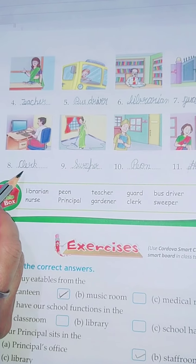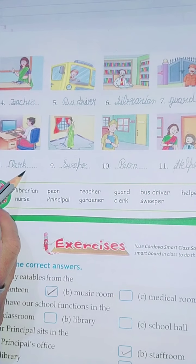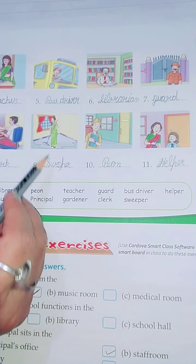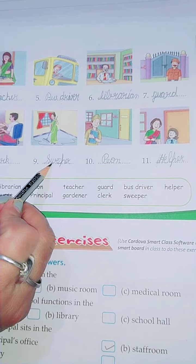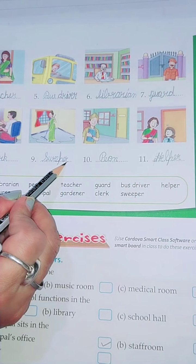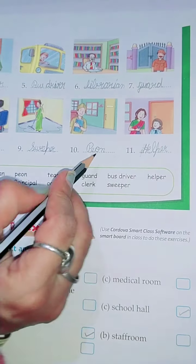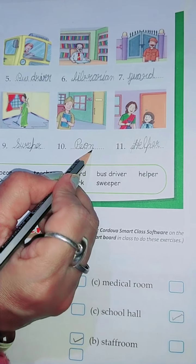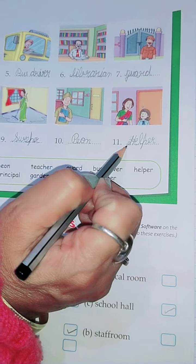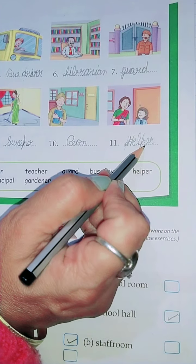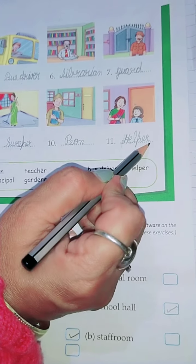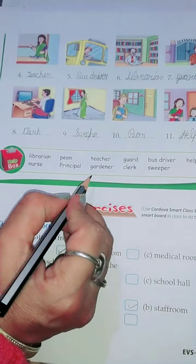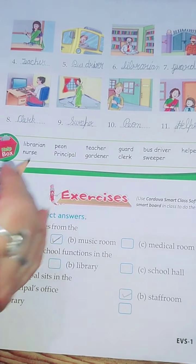The eighth is clerk — C-L-E-R-K. The ninth is sweeper — S-W-E-E-P-E-R. The tenth is peon — P-E-O-N. And the eleventh is helper — H-E-L-P-E-R. All these spellings are given in the help box — please check from there and write the correct spelling.